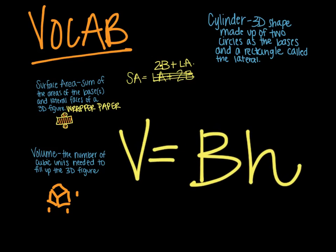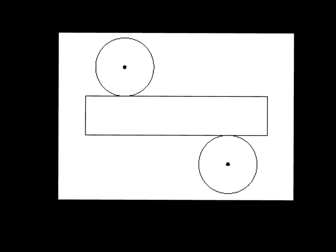The formula for volume is V equals B times H. Please notice it is a capital B, because we're talking about the area of the base times the height. We will talk about it more specifically.